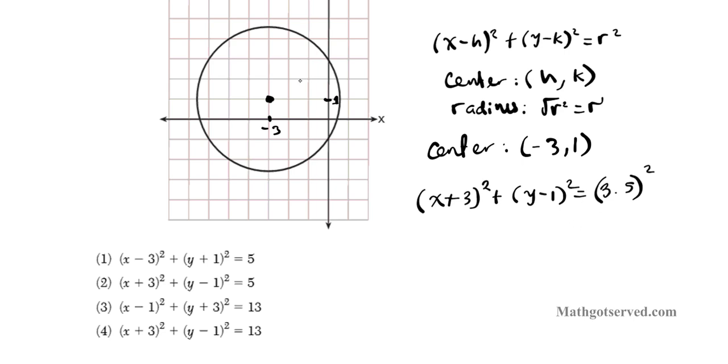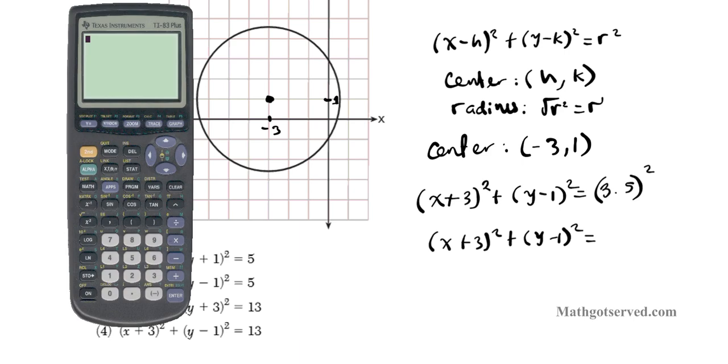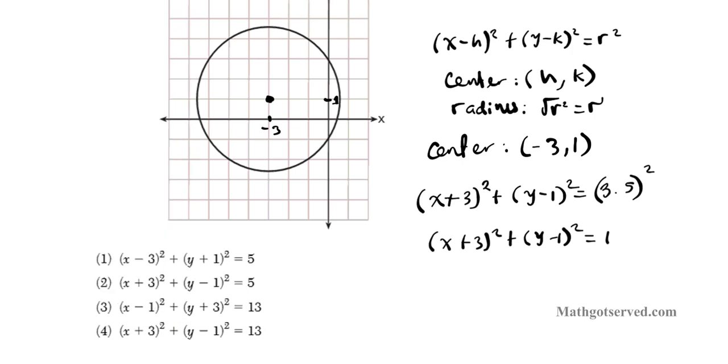Now to get the radius squared, we just count how many units from here to an extremity. So 1, 2, 3. Let's say it's 3.5. So you're going to have 3.5 quantity squared. So what's 3.5 squared? When you do 3.5 squared in a calculator, you have 12.25. It's closest to 13. So we can just assume that it's 13.